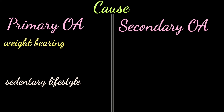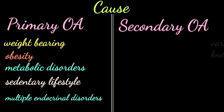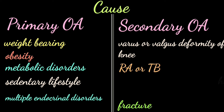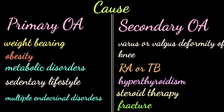In primary OA, it occurs due to weight bearing, sedentary lifestyle for people who do not exercise at all, obesity, multiple endocrinal disorders, and metabolic disorders. In secondary OA, it may occur due to various valgus deformities of the knee, fractures, diabetes mellitus, rheumatoid arthritis, tuberculosis, hyperthyroidism, and steroid therapy — for people who have been on steroid therapy for a long period of time.